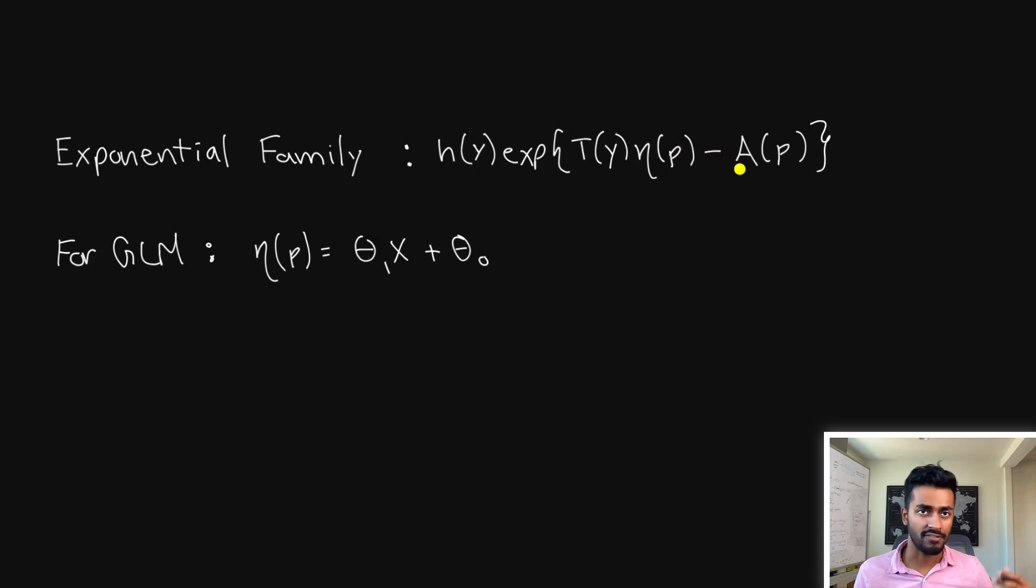When determining our function of interest, which is related to the link function, we are really just concerned with this eta p. And for generalized linear models, this eta p will take a linear form. So let's try to solve this case for logistic regression.